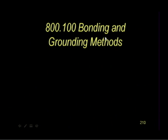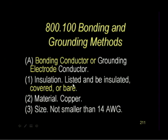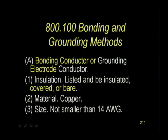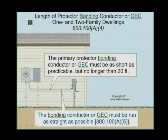Bonding methods — not grounding methods, bonding methods. Bonding conductors must be listed. They can be insulated, covered, or bare. Bonding conductors are copper. Bonding conductors are not smaller than 14 AWG. So the key: this bonding conductor is copper, not smaller than 14 AWG, and it can be insulated or bare. No color required.